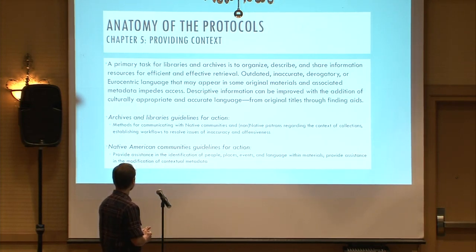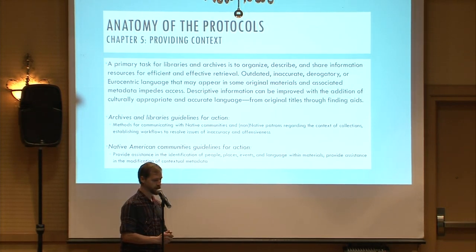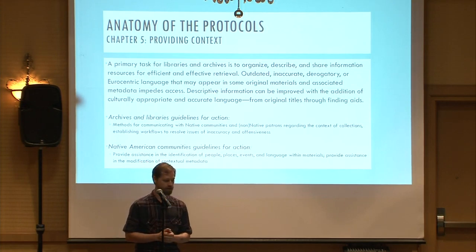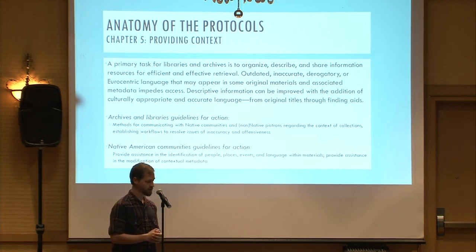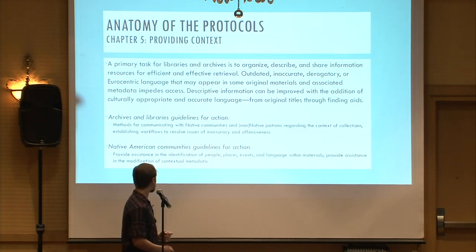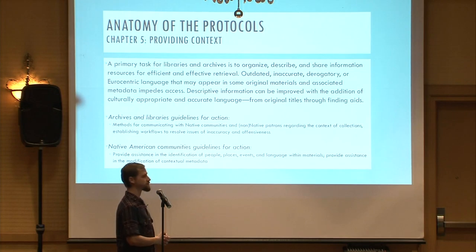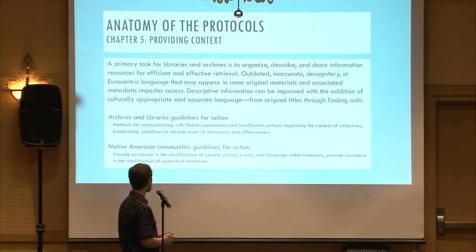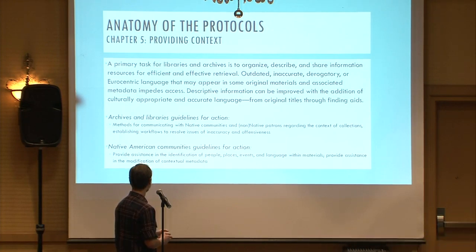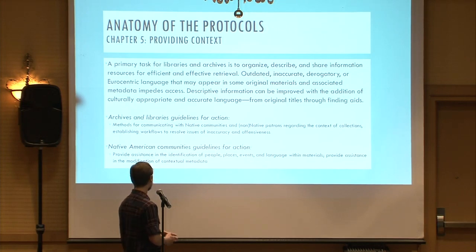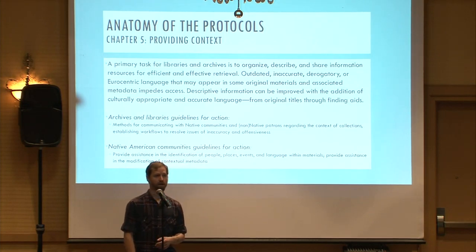Chapter 5 is about providing context. This goes back to how outdated, inaccurate, derogatory, or Eurocentric language may appear in some materials or associated metadata. Descriptive information can be improved with the addition of culturally appropriate and accurate language, ranging from original titles all the way down to finding aids. Guidelines for archives and libraries include methods for communicating with Native communities and both Native and non-Native patrons regarding the context of collections, and establishing workflows to resolve issues of inaccuracy and offensiveness. For Native communities, this section provides assistance in identifying people, places, events, and language within materials, and promotes the notion of supporting archives and libraries in modifying contextual metadata.